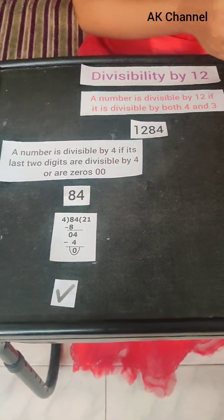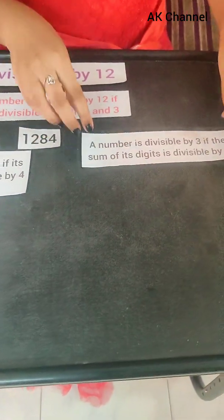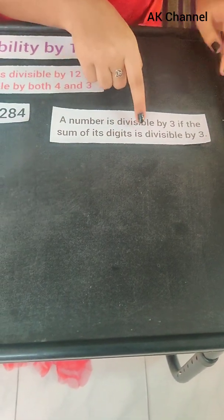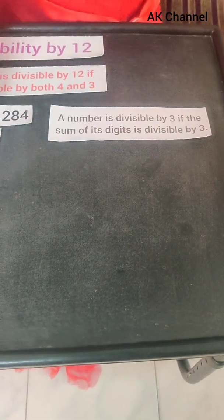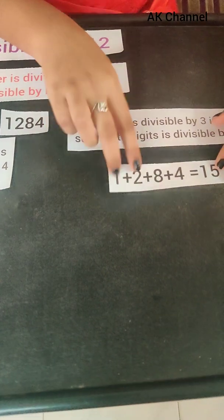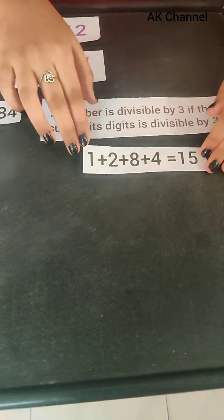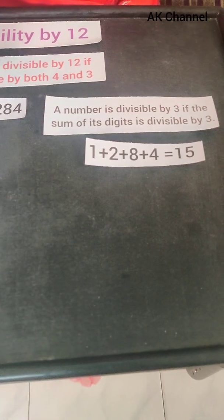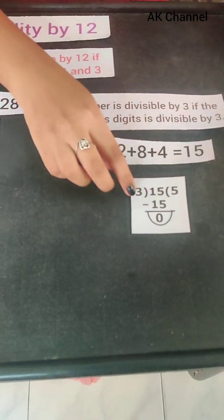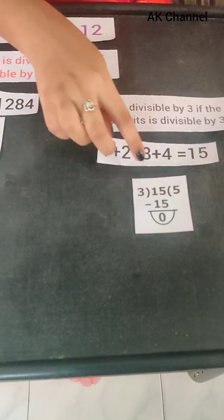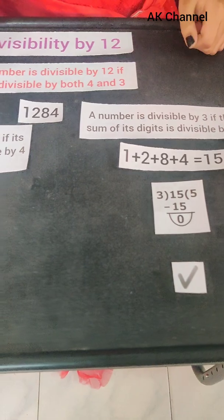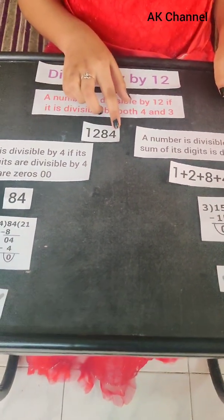Next, let's see whether it is divisible by 3 or not. Divisibility rule of 3: a number is divisible by 3 if the sum of the digits is divisible by 3. So, 1284 — sum is 1 plus 2 plus 8 plus 4 is equal to 15. When we divide 15 by 3, we get remainder 0. So it is divisible by 3. We can conclude that 1284 is divisible by 3.